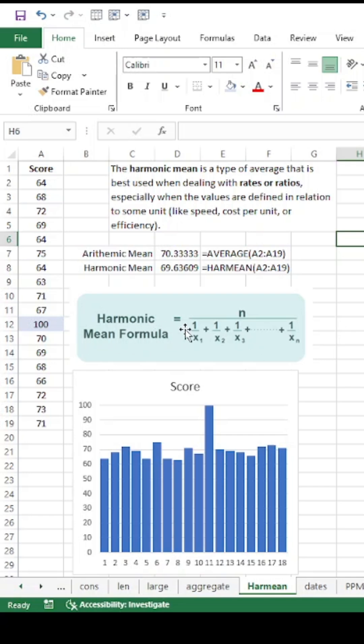The formula is here for harmonic mean, but this is available in Excel and is easy to use. So this is often used with ratios and rates. Think of speed or cost per unit, efficiency, things like that.